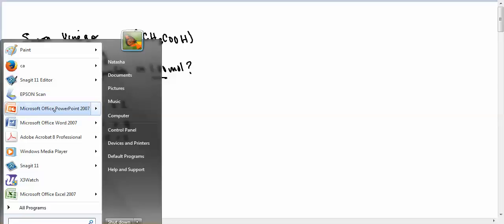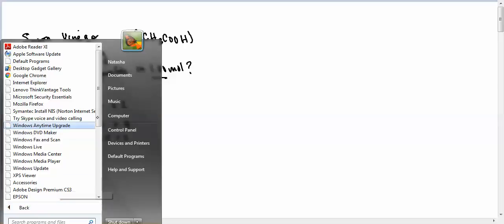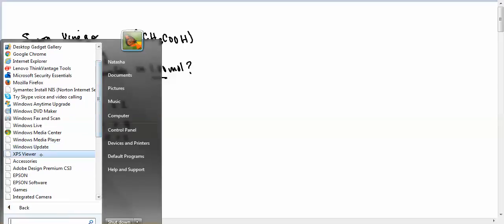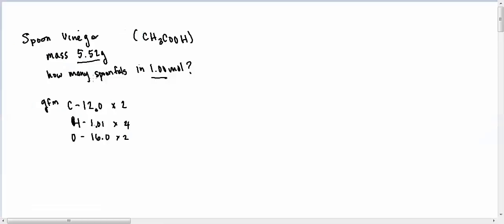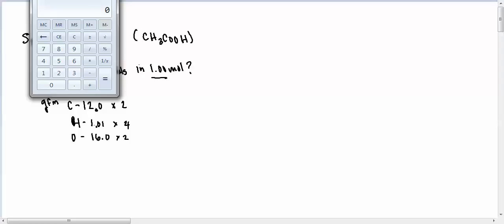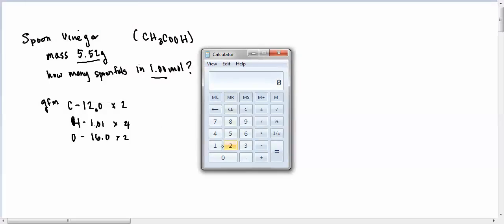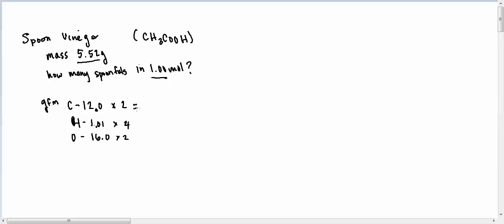Let me see if I can pull up a calculator. Sorry, I should have pulled this thing up beforehand. Alright, so 12 times 2, actually I could have done this in my head. 12 times 2, that's 24. 1.01 times 4 is 4.04, and 16 times 2 is 32.